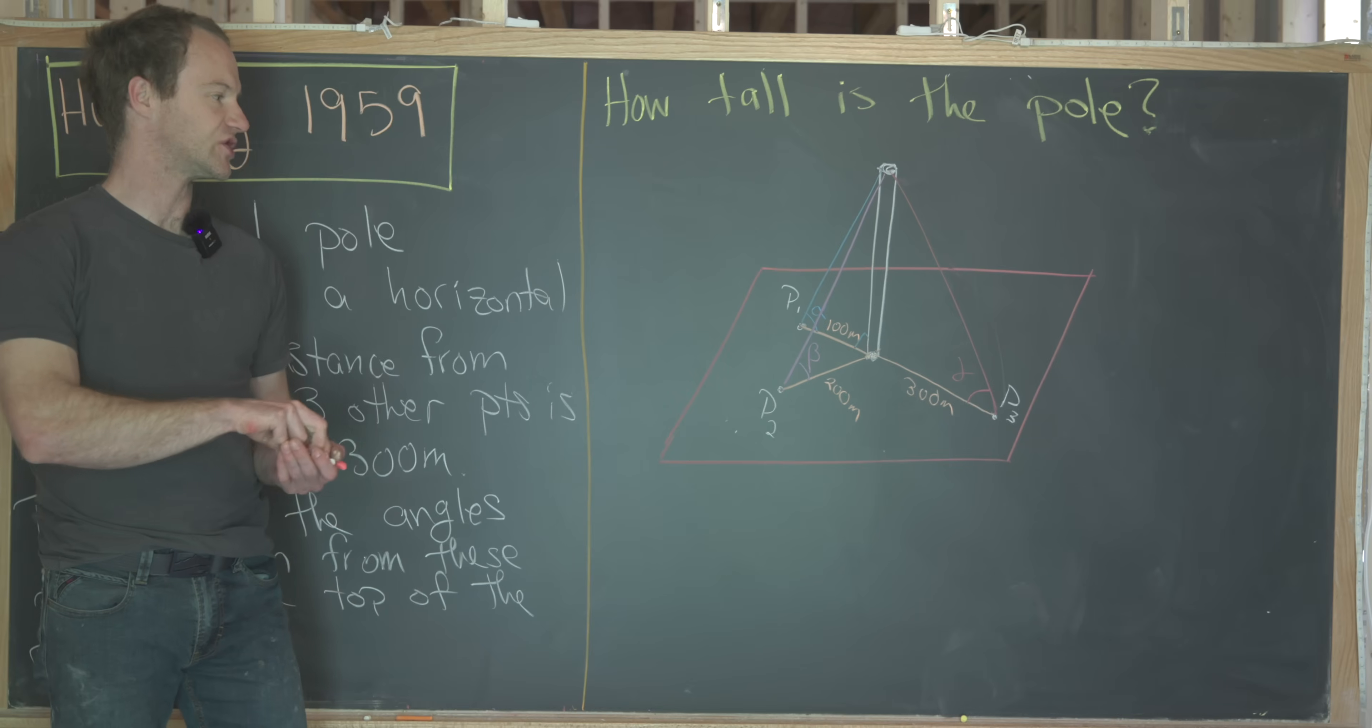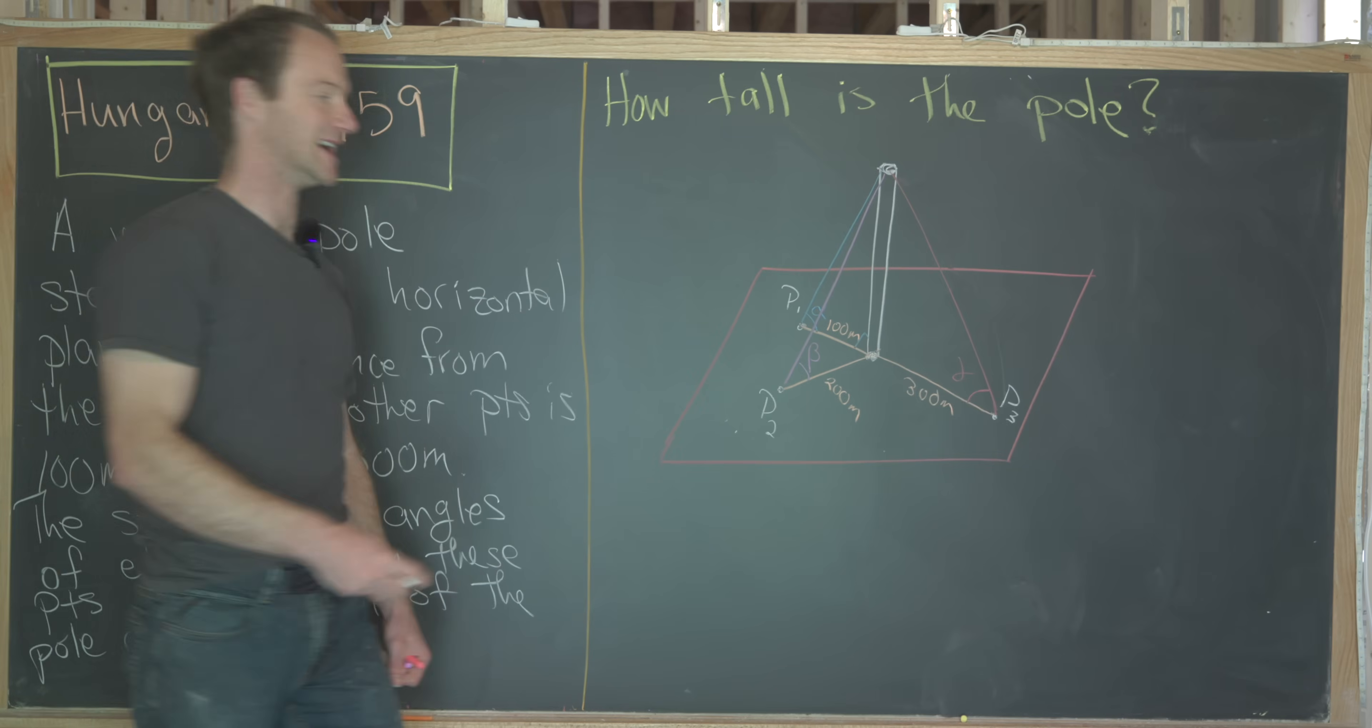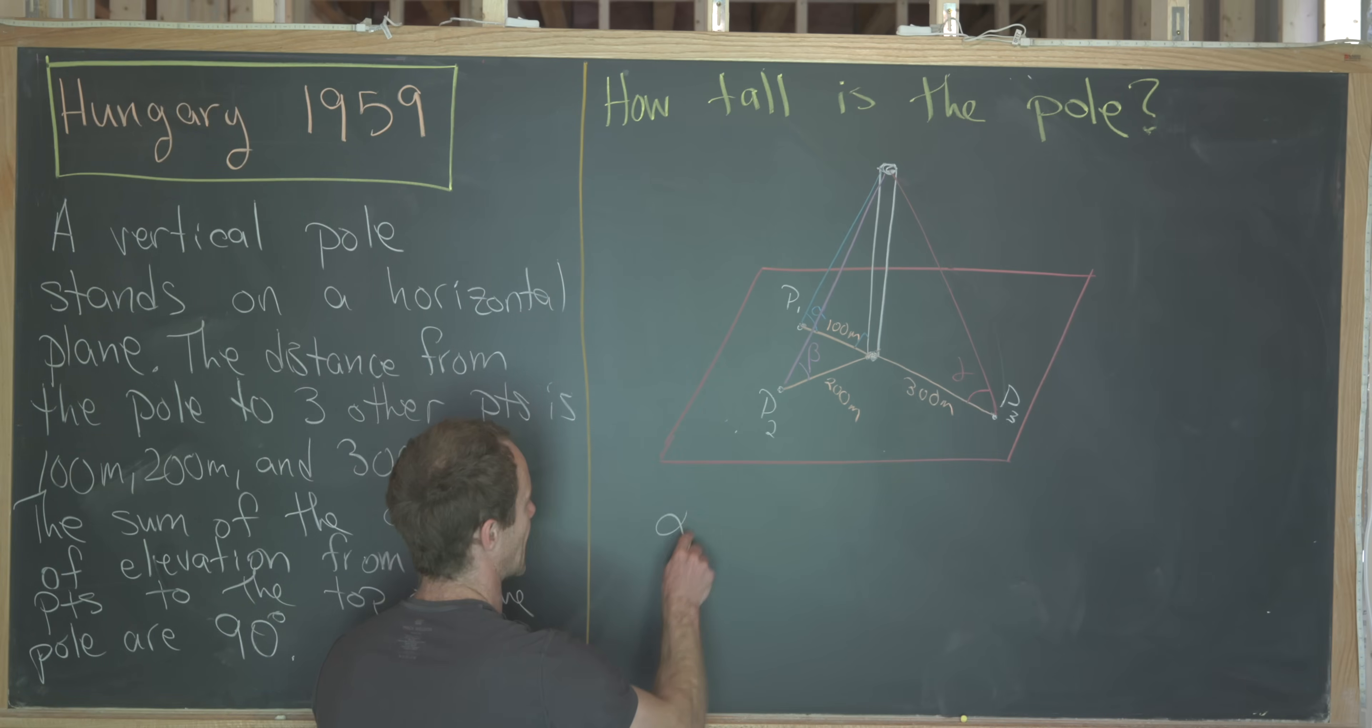And now let's look at the information that's given. We know that the sum of these angle measures is 90 degrees. So we know that alpha plus beta plus gamma equals 90. And then furthermore, we know the tangent and the cotangent of these angles pretty easily. And in fact, as we'll see moving through this solution, the cotangent will be a little bit nicer to calculate.